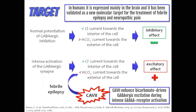It has been shown that in febrile epilepsy this excitation is strictly dependent on the continuous flow of bicarbonate ions produced by CA7, and it is suppressed by the addition of CA inhibitors.